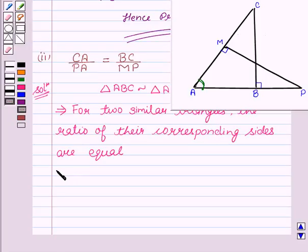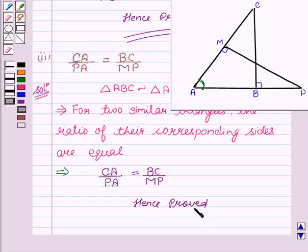This implies that CA upon PA equal to BC upon MP. Hence proved.